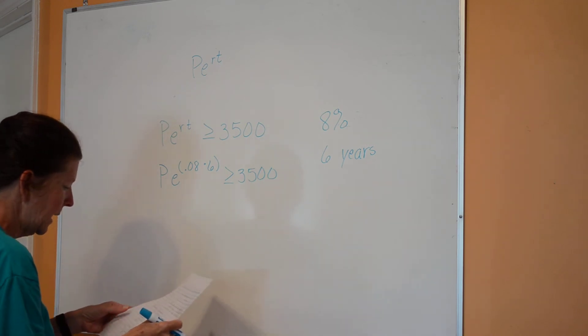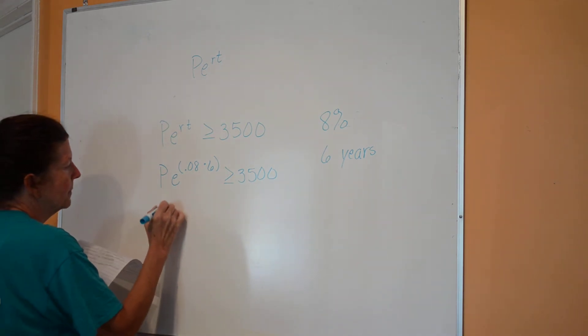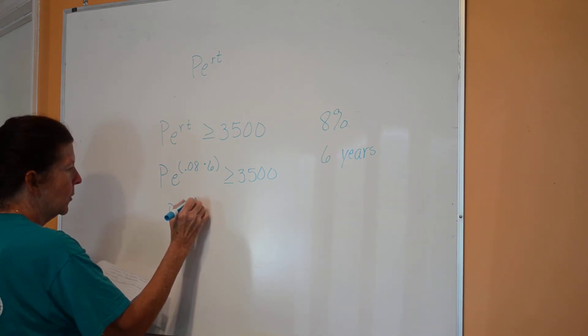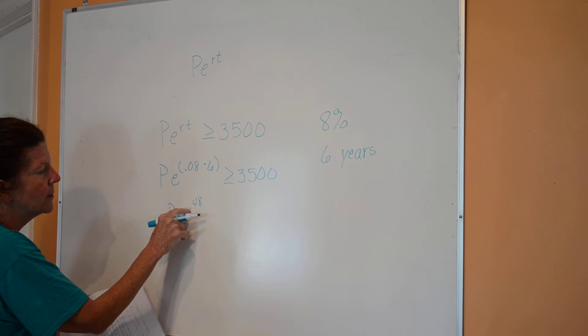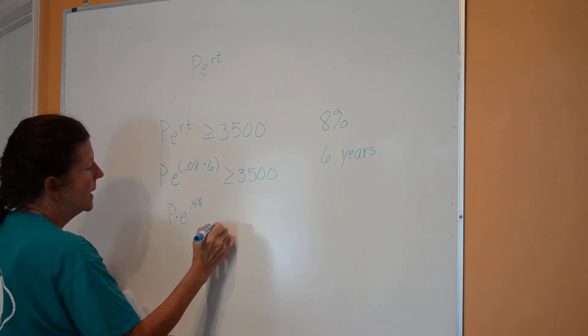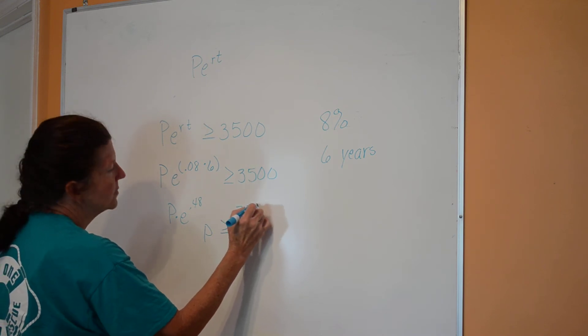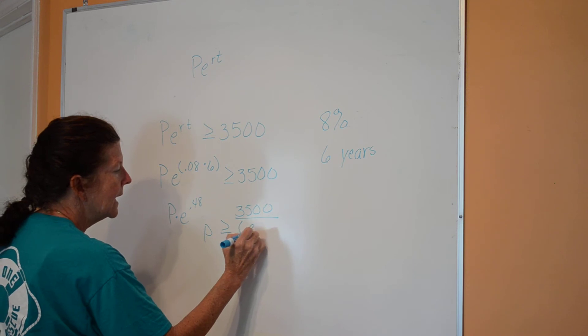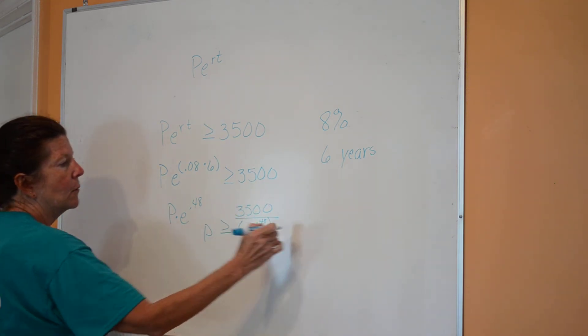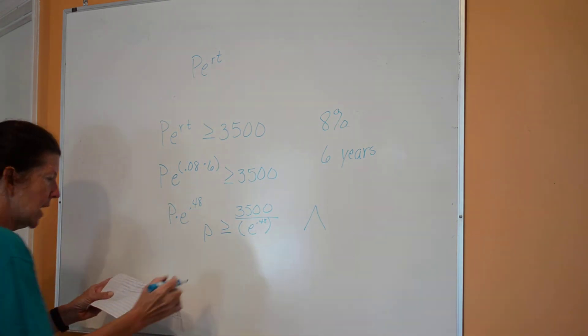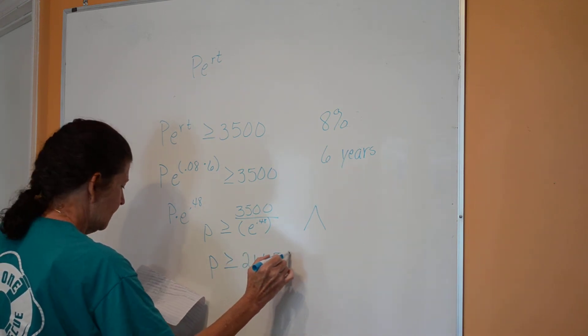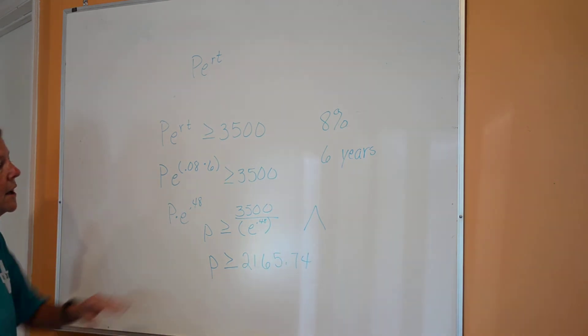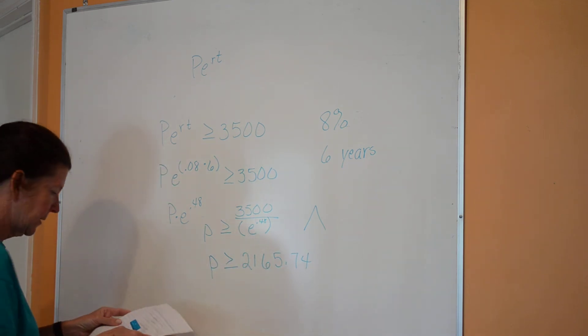So that's my unknown, and I have my e, which is not an unknown. It's a button on your calculator or it's 2.72 if you want to put it in by hand. The rate, I've got to take that and make it into a decimal, so 0.08 times 6 has got to be greater than or equal to 3,500. So I can get a value right there for e raised to the 0.48 power. I want to solve for P, so I'm going to divide by e raised to the 0.48 power. So P is greater than or equal to 3,500 divided by e raised to the 0.48 power. And I find that they should have invested either $2,165.74 or more than that.